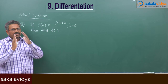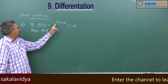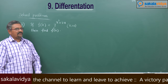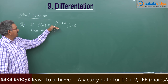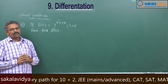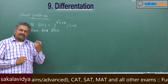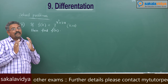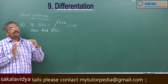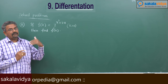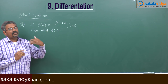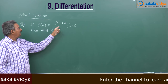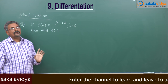In this problem, visualize x squared plus 3x as u, so we have 7 to the power of u. Visualize 7 as a, giving a to the power of u. The derivative of a to the power of u with respect to x is a to the power of u times log a times du by dx, where du by dx is the derivative of x squared plus 3x.